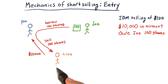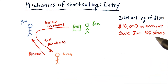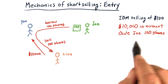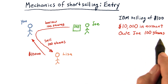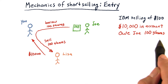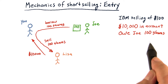Lisa has 100 shares of stock. Now, the problem arises that Joe may decide he wants his 100 shares back. What you'll have to do is go buy them from someone and then give them back to Joe. But we'll deal with that a little bit later.